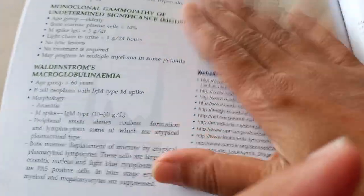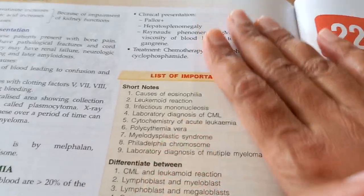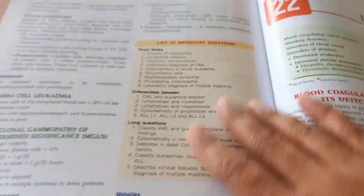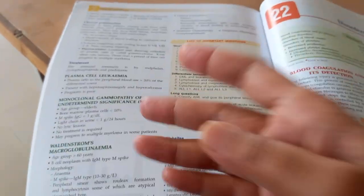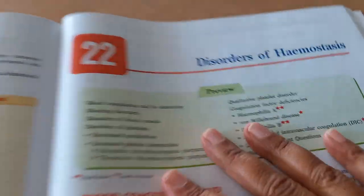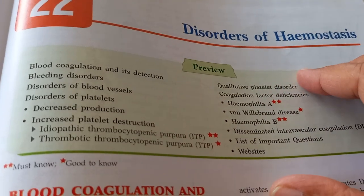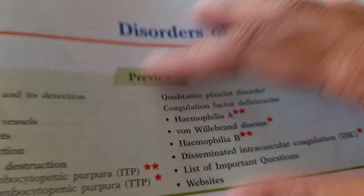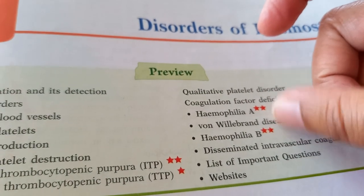At the end of every chapter they have given you a list of important questions. However, they did not give you the answers or quick points or a summary of the chapter which I would have preferred. They have given a preview of the whole chapter. Must know, good to know. Hemophilia B, Hemophilia A.